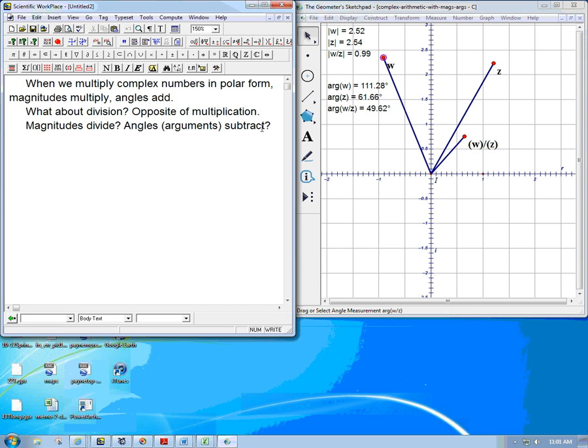So let's write that down very explicitly. Basically, the magnitude of a quotient, w over z, of two complex numbers is just the magnitude of w over the magnitude of z. That's it. In symbols, but basically magnitudes divide. And angles do subtract. So that's the symbolic form of it. The argument of w over z is the argument of w minus the argument of z.